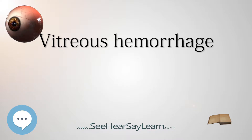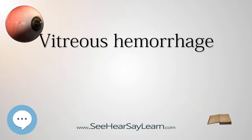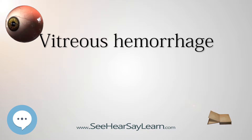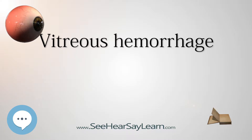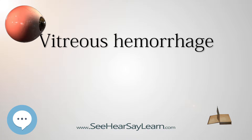There are many factors known to cause vitreous hemorrhage. The most common cause found in adults is diabetic retinopathy. Abnormal blood vessels can form in the back of the eye of a person with diabetes. These new blood vessels are weaker and prone to breaking and causing hemorrhage. Diabetic retinopathy accounts for 31.5–54% of all cases of vitreous hemorrhage in adults in the United States.